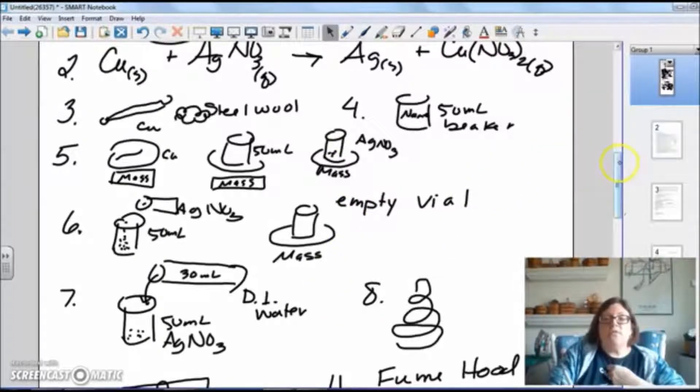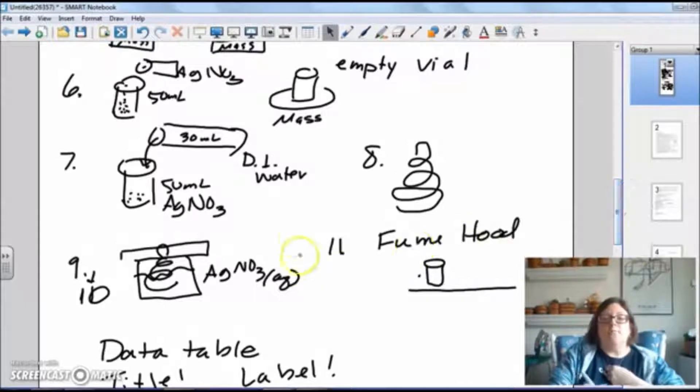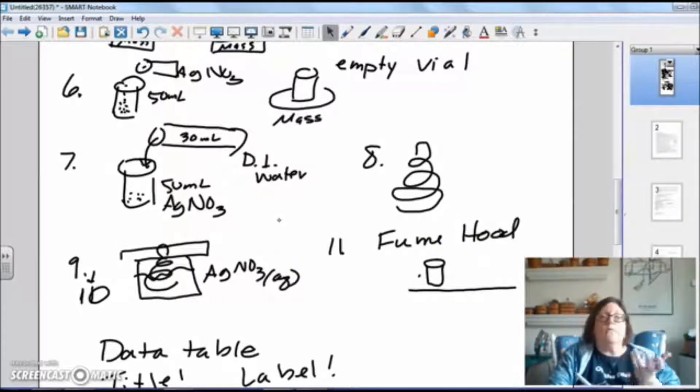Step seven, we need to add 30 milliliters distilled water. Where do you get your distilled water? Well, of course, from the water bottle at your table. You need to measure it out 30 milliliters.